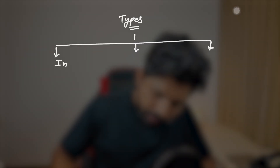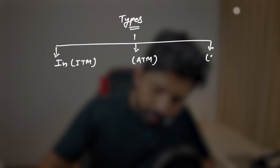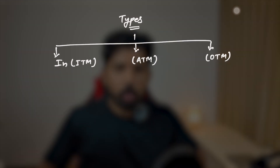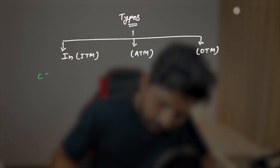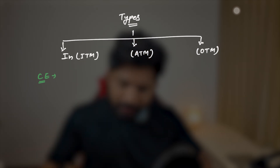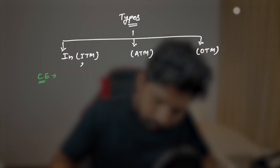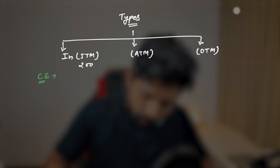The three classifications are: in the money (ITM), at the money (ATM), and out of the money (OTM). For a call option, let's say the current price of Apple is 200 and you bought the call option at a strike of 180. If you immediately execute the order you get a benefit of $20 — that's positive cash flow, so this option is in the money. All strike prices below the current price of 200 are in the money for call options, since you'd have positive cash flow if you exercised immediately.